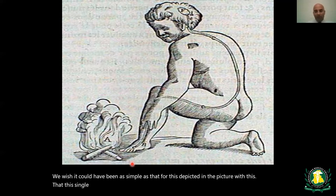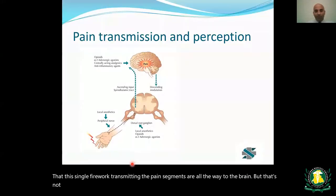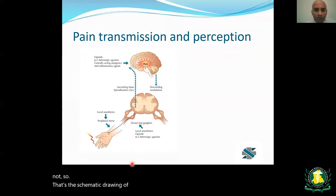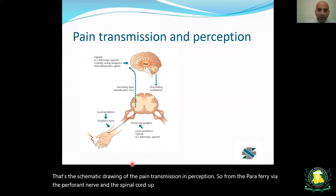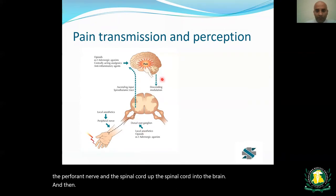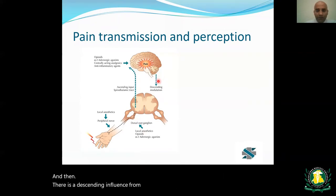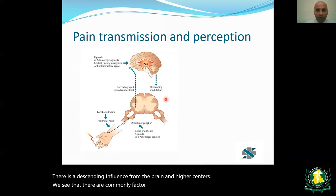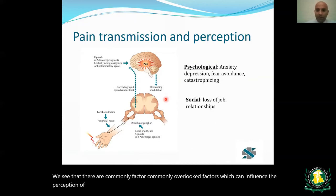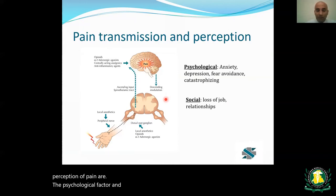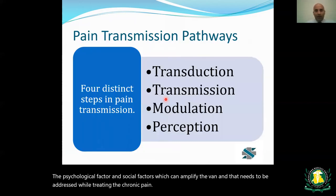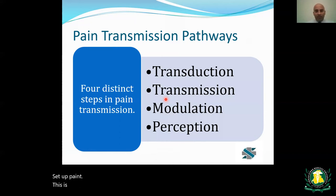It's not as simple as a single fiber transmitting pain signals to the brain. The schematic of pain transmission shows the pathway from the periphery via peripheral nerves into the spinal cord and up to the brain, with descending influence from the brain and higher centers. Commonly overlooked factors that influence pain perception are psychological and social factors, which can amplify pain and must be addressed when treating chronic pain.